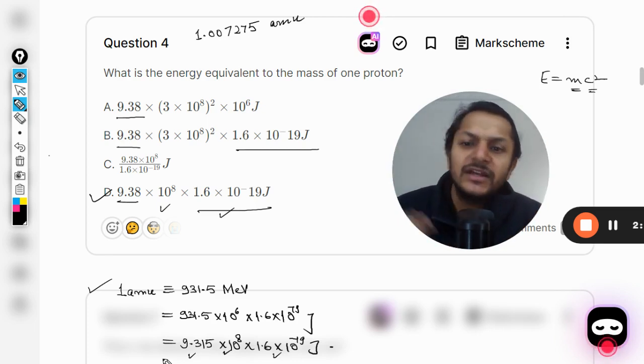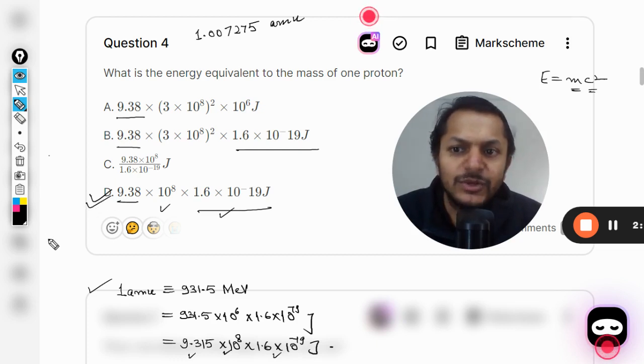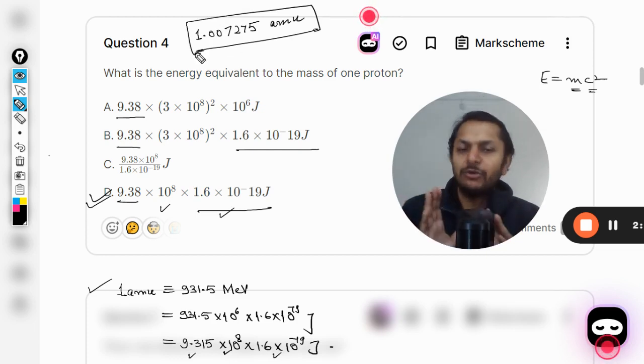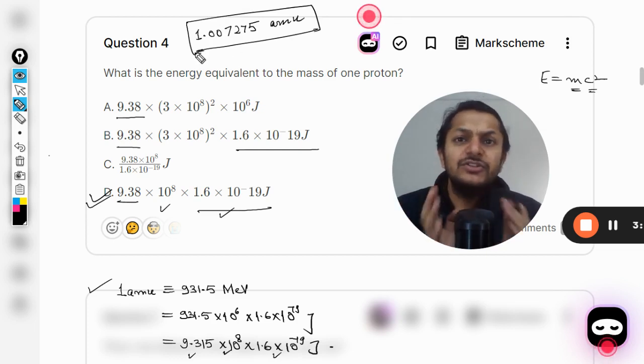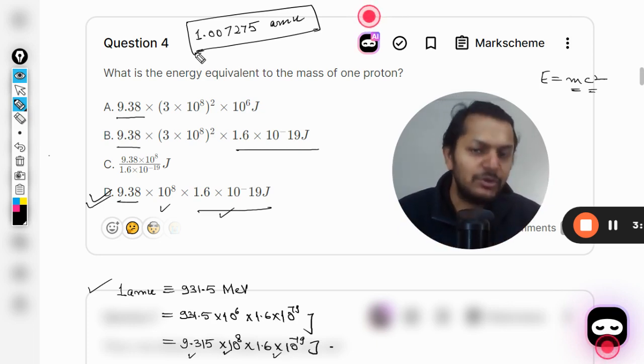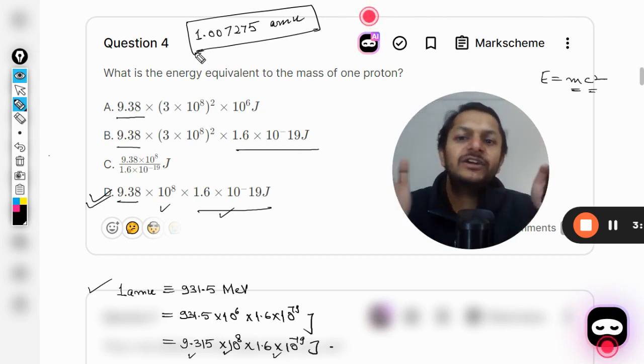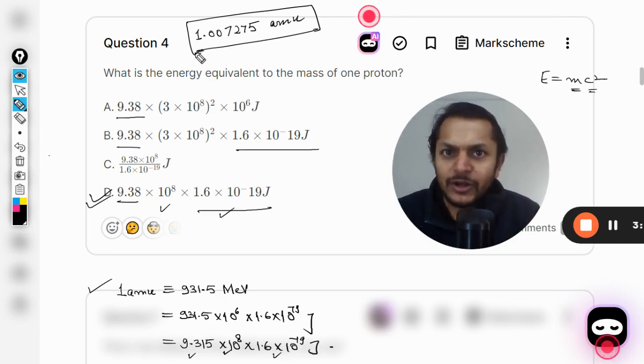That is why the answer should be D. If you remember this, because this data I think either it will be given in your data booklet, must be given in the data booklet, you can verify. Otherwise you need to remember the mass of proton and the mass of neutron in amu. If you remember that, you can use this value here, you can find those values accordingly. But still you can guess that yes, the answer will be D.